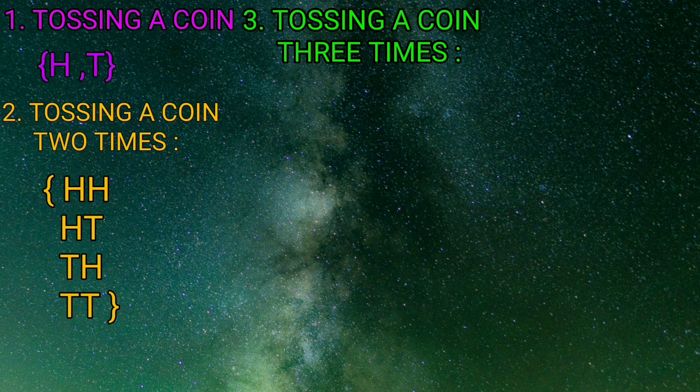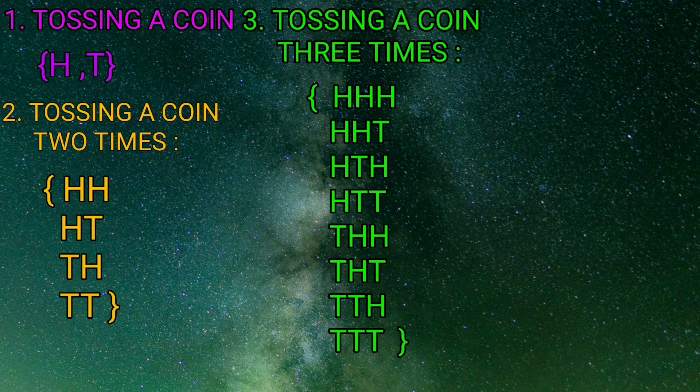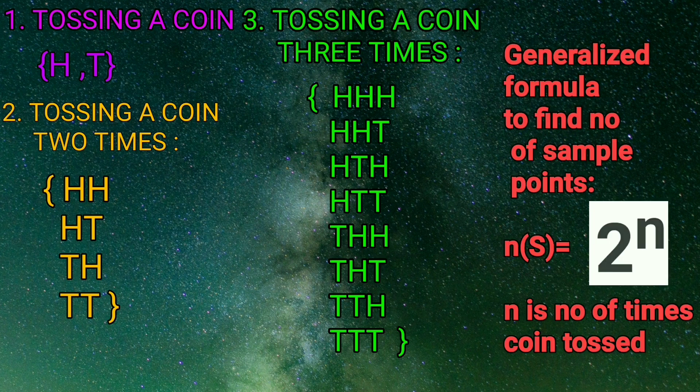Number three: tossing a coin three times. There is a very easy way to remember all the outcomes. As you can see, we have eight outcomes. The best way is: in the first column write four H's then four T's; in the second column write two H's then two T's, two H's then two T's; and in the third column write H and T alternately. This way you will get all eight outcomes.